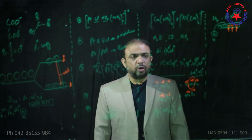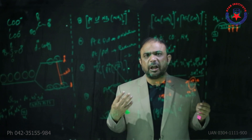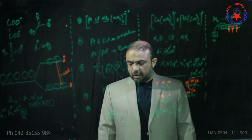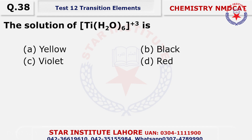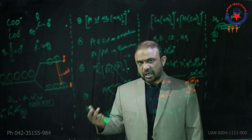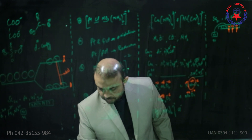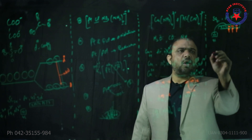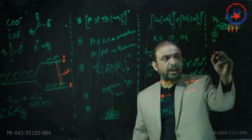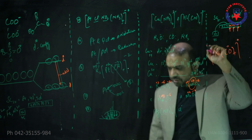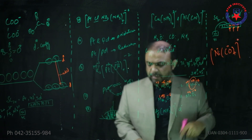Question thirty-seven: which of the following has the maximum unpaired electrons? Mn2+ has five unpaired electrons — the others don't have as many; you can count by looking at the configuration. Question thirty-eight: the solution of titanium hexa hydroxo complex is violet in color — this is mentioned in the FSC textbook. Question thirty-nine: which of the following has a neutral coordination sphere? A neutral coordination sphere means a neutral ligand is attached and the complex has no charge. The choice with carbonyl tetra with no charge is neutral — alpha choice has potassium attached, making it an anionic complex.